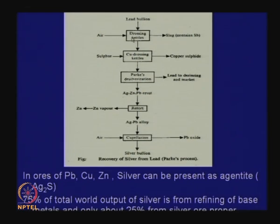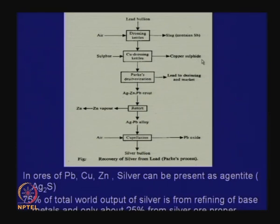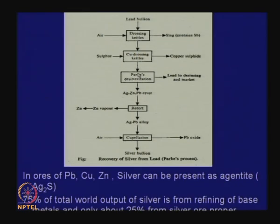The essential steps are: by aeration and drossing, slag and antimony will be removed. Then by addition of sulfur, copper will be removed from the bullion. Then there is the Parkes desilverization process, which removes silver by addition of zinc. When zinc is added to lead, a silver-zinc-lead crust forms.